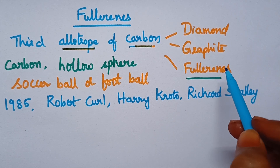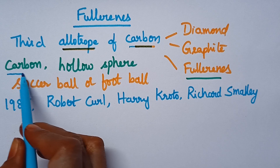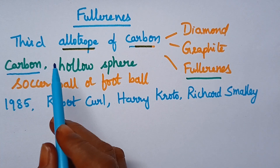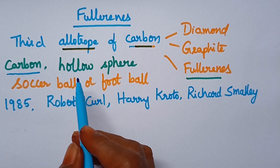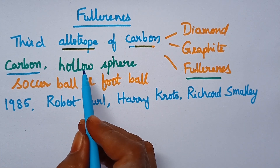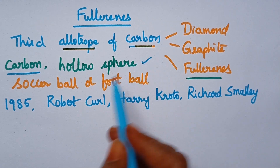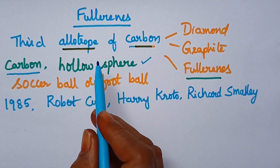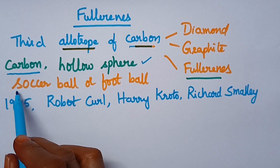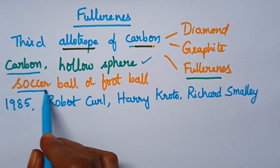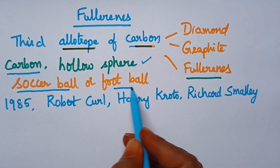In general, these fullerenes consist of carbon atoms only. Coming to the shape of the fullerenes, they consist of a hollow sphere structure — the structure of fullerenes is just similar to that of a soccer ball or football.